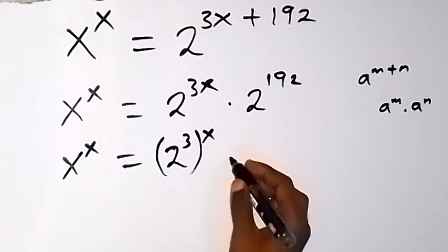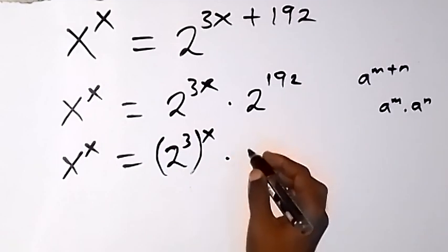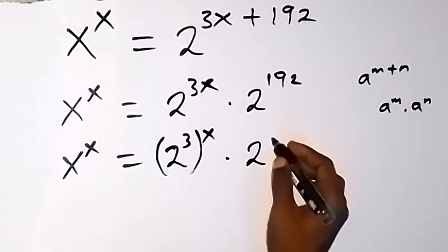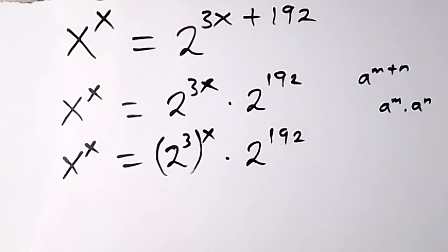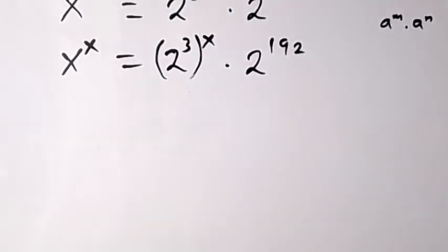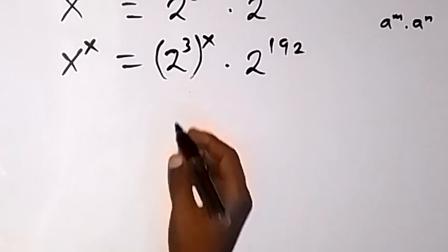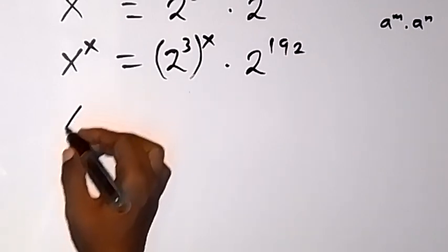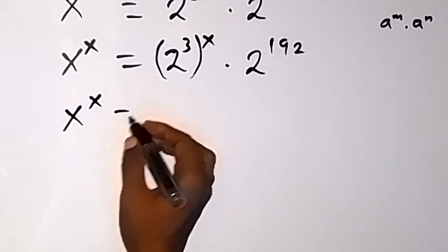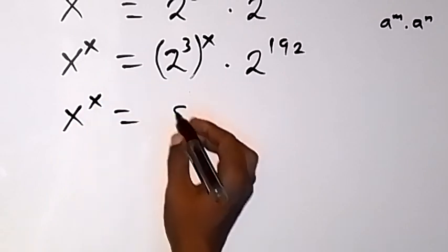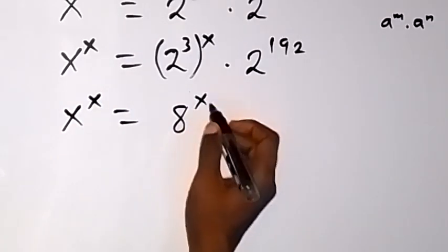Then multiply by 2 raised to power 192. And from there, we can simplify this and write it as x raised to power x equals to 8 raised to power x.